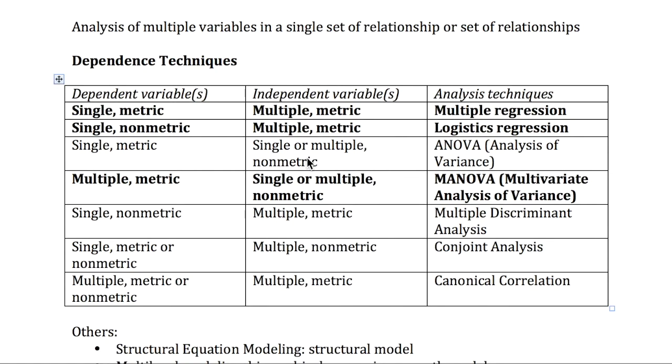If we have a non-metric independent variable and metric dependent variable, ANOVA or MANOVA should be used. This technique allows us to compare the values of dependent variables across different groups. In this course, I will focus more on MANOVA because ANOVA has been covered in DAV 721.